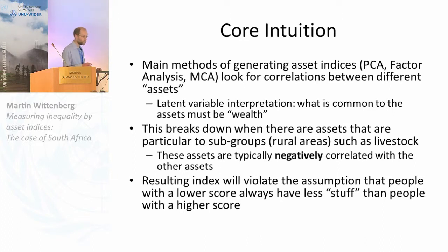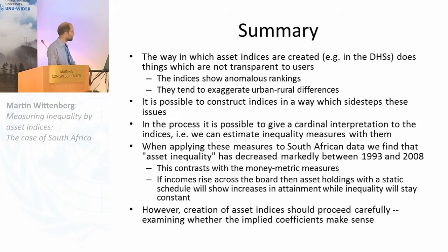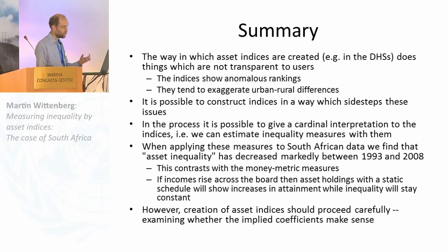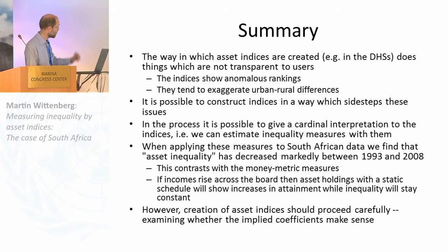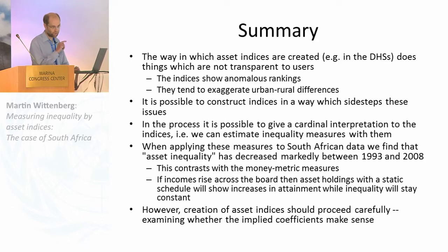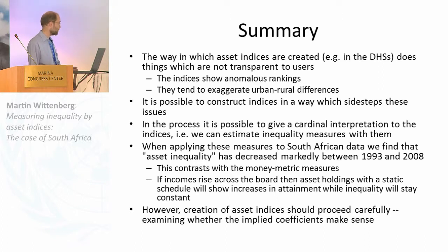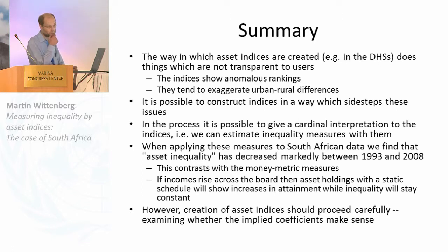That's the one new idea. This is integrated into a bigger argument. Asset indices can have these anomalous rankings, and in our context that tends to exaggerate urban-rural differences. What I'll argue is that one doesn't have to construct asset indices in the way that has been done thus far — we can actually get around this problem. One of the nice side effects of constructing asset indices in a different way is that we can give a cardinal interpretation to the indices, which means we can use inequality measures on them.